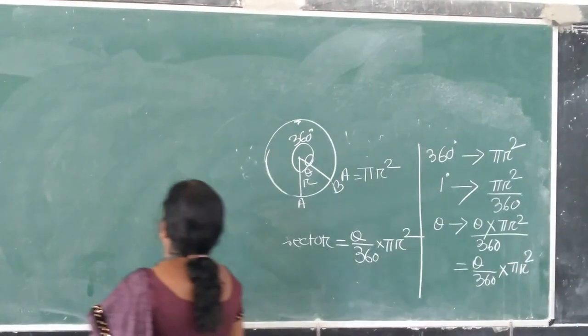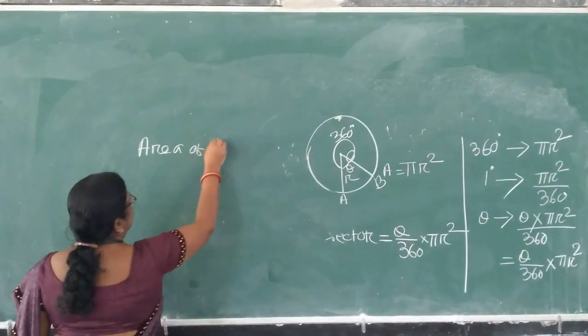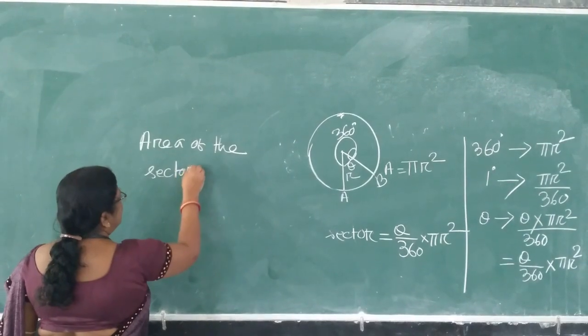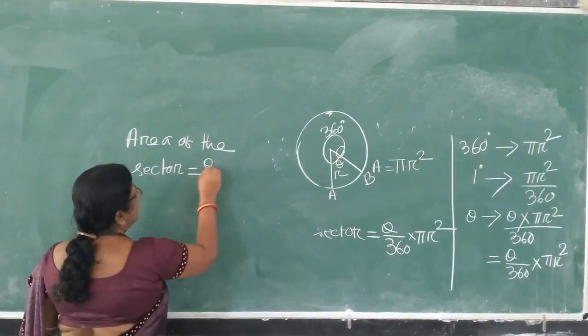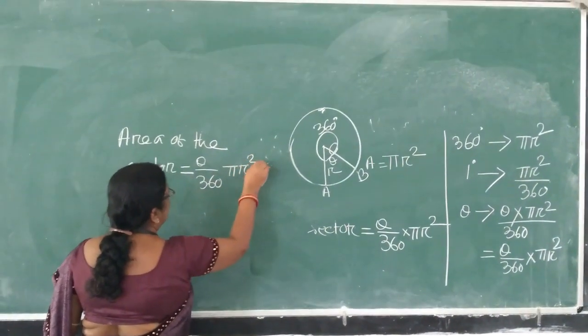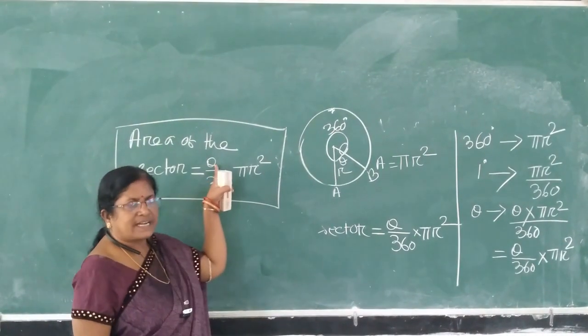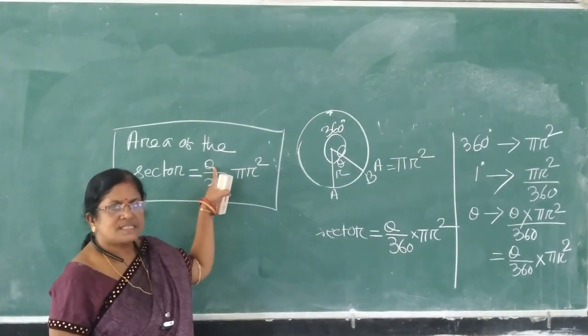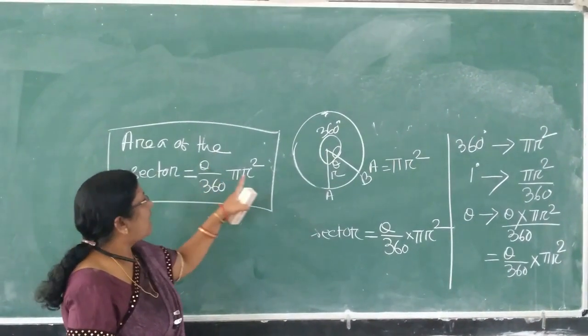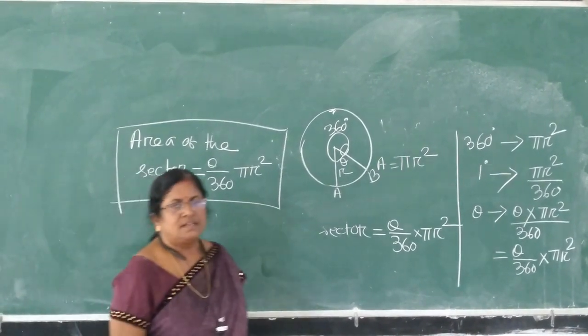So, area of the sector is equal to theta by 360 into pi r square, where theta is the sector angle, the angle produced by the sector at the center, and R is the radius of the circle.